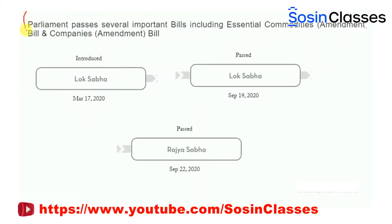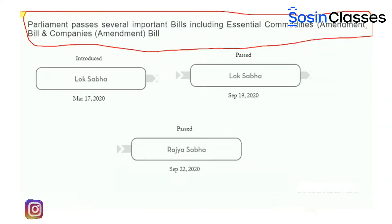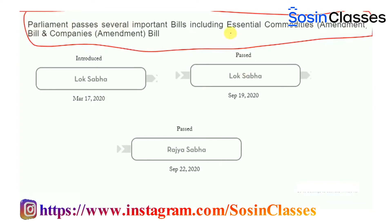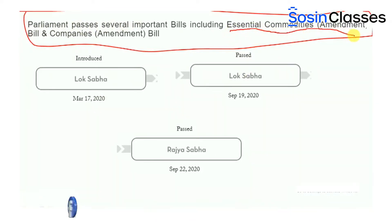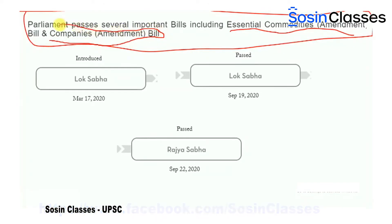Here's a snapshot of a headline from a news article that reads: Parliament passes several important bills, including the Essential Commodities Amendment Bill. We have already discussed about this bill, and the Companies Amendment Bill we will be covering in today's session.